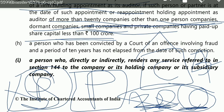The eighth disqualification: a person who has been convicted by a court of an offense involving fraud, and a period of 10 years has not elapsed from the date of such conviction. So if 10 years have been completed since the conviction, that person can become an auditor. But until those 10 years are complete, they cannot become an auditor because they were guilty of fraud.